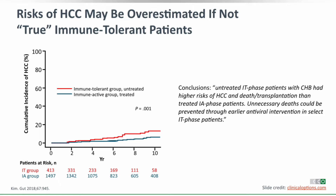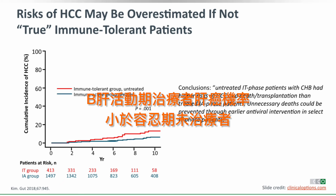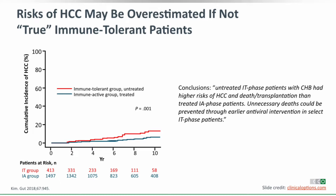Another study compared cancer risk in untreated immune-tolerant patients versus treated immune-active patients. In contrast to the prior slide where IT patients had no cancer, this group did see cancer risk over about a decade in untreated IT patients. With well-matched statistics and competing risk analysis, they showed a hazard ratio for HCC about two-fold higher in the IT group versus the untreated immune-active group, concluding untreated immune-tolerant patients had higher HCC risk and recommending treatment consideration.